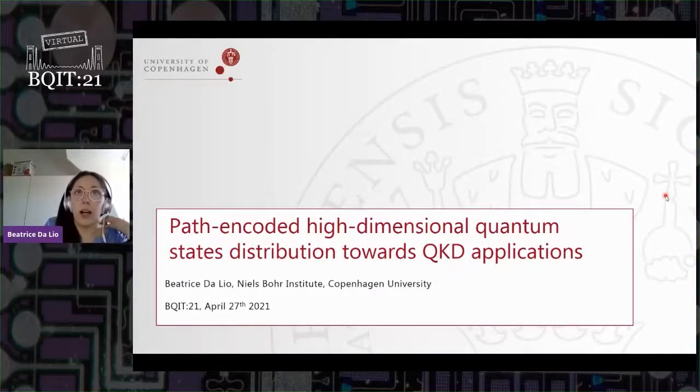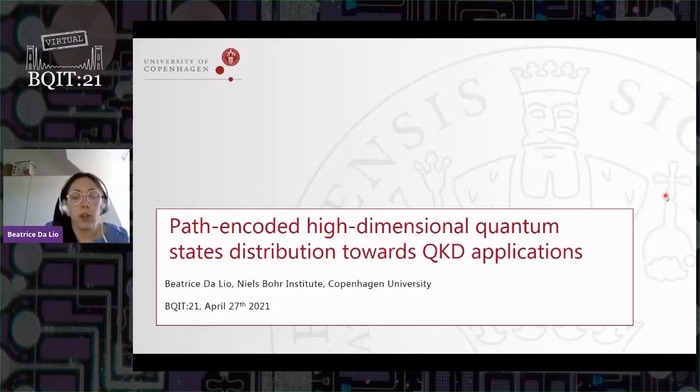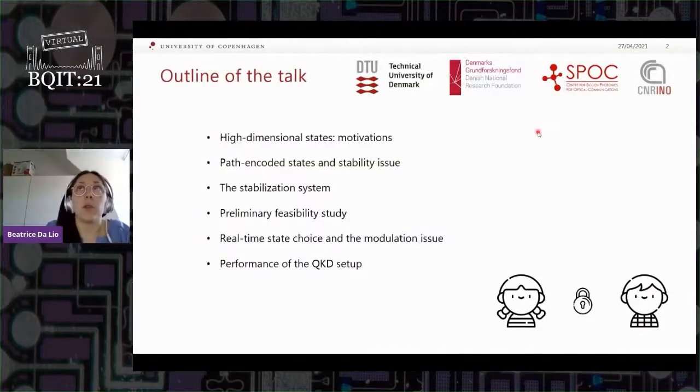The topic of my talk is path-encoded high-dimensional quantum states distribution towards QKD applications. This was part of my PhD project that I carried out at the Technical University of Denmark. The outline of the talk is the following: a little bit about motivations on why we want to use high-dimensional states and why path encoding is interesting, what are the issues like stability and how we can tackle them, and then preliminary feasibility results that shows that this actually works and how to move forward to a more concrete setup that's more close to the actual applications.